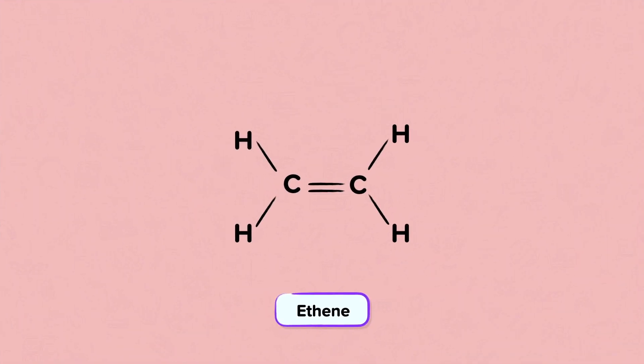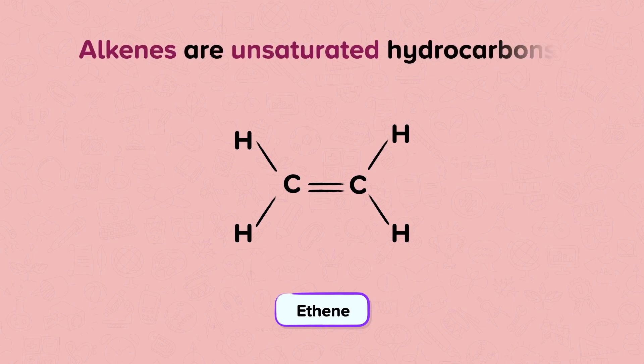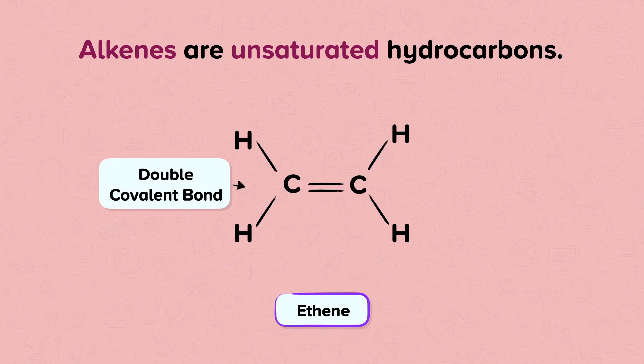Alkenes are unsaturated hydrocarbons. They have a double covalent carbon-carbon bond, so they contain less than the maximum possible number of hydrogen atoms per carbon atom. Alkenes potentially have space for spare bonds to bond with other atoms in a reaction, and therefore they are more reactive than alkanes. The word unsaturation means that the carbon atoms are not bonded to the maximum number of atoms they can be.